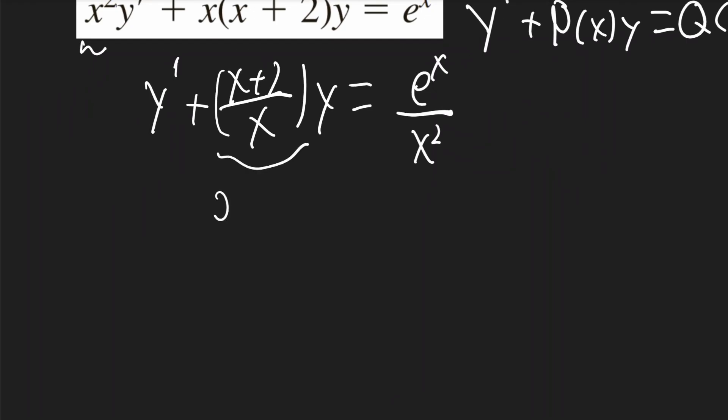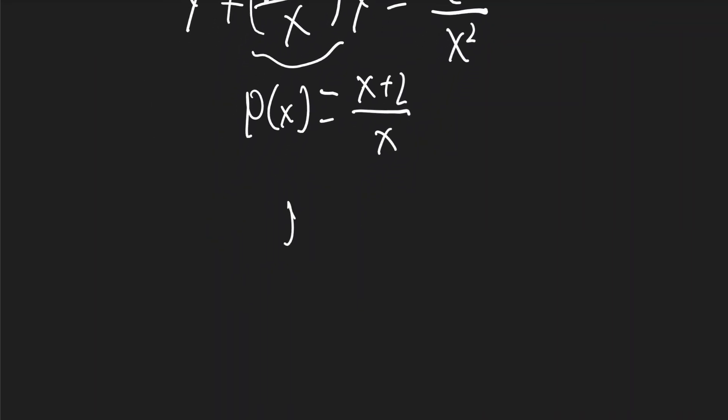My new p of x is this term. It's x plus 2 over x. So mu is going to be e to the power of the integral of p of x dx. So mu will be equal to e to the power of the integral of x plus 2 over x dx.